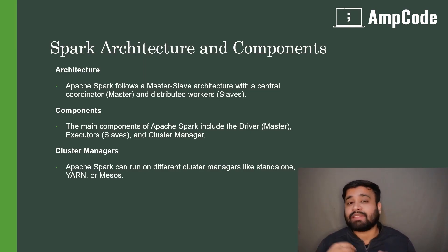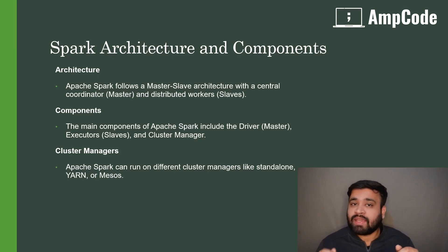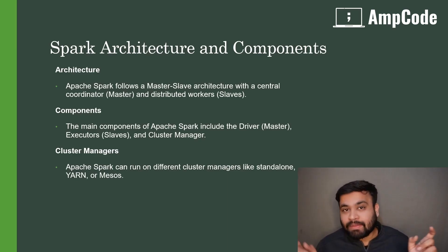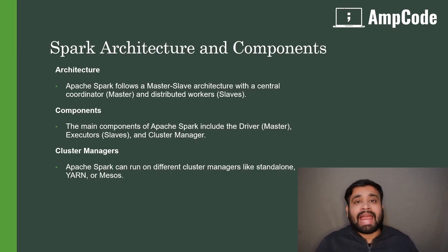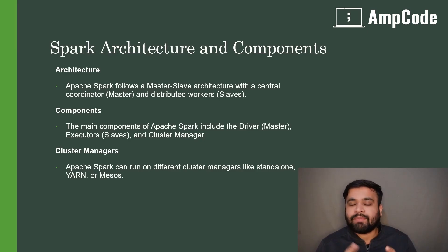In Spark, we have a central coordinator which is the master, and the distributed workers which are the slaves. Distributed here means all the worker nodes run in parallel to process data — it splits tasks into smaller chunks and processes them. It also takes benefit of in-memory processing to efficiently process our data and give us the expected output.